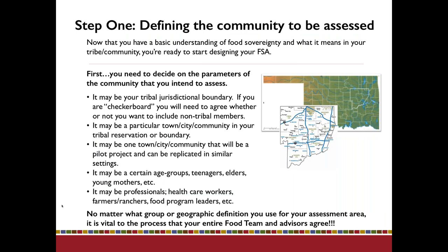Now we're going to go to step one of actually beginning your work toward conducting a community food sovereignty assessment. This seems like a no-brainer but it can hold people up: the first thing you have to do is define the community to be assessed. One of the simplest ways is to use your tribal jurisdictional boundary or your reservation boundary. It depends on the legal status in your area. If you're checkerboard, like many of us are, your food team will need to discuss and agree on the parameters.